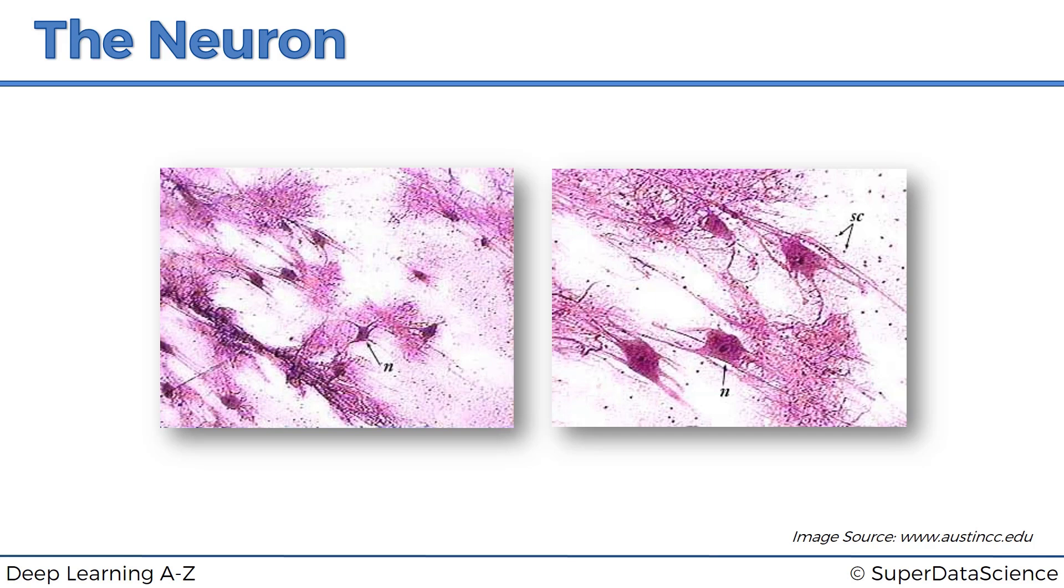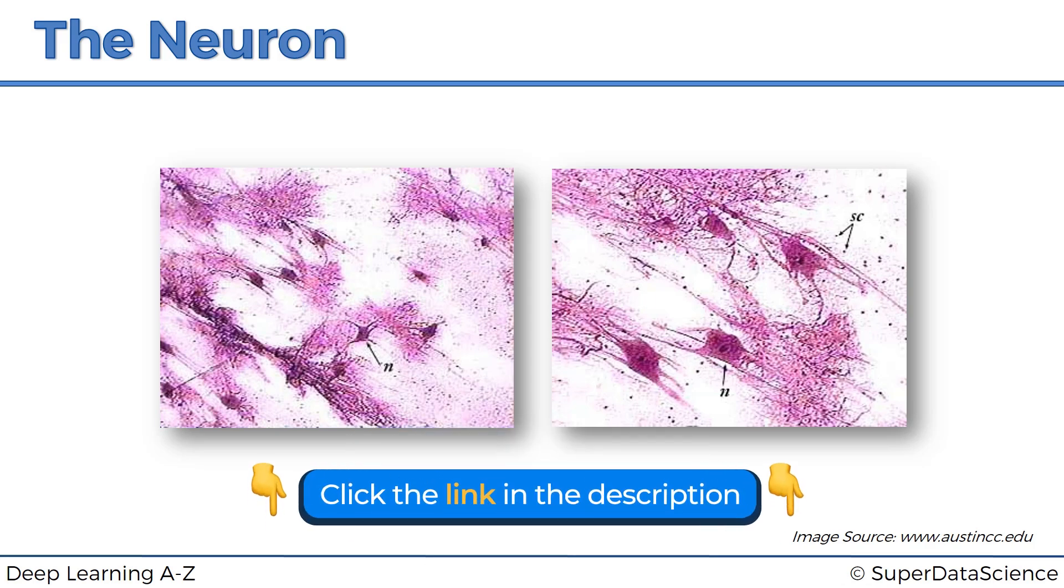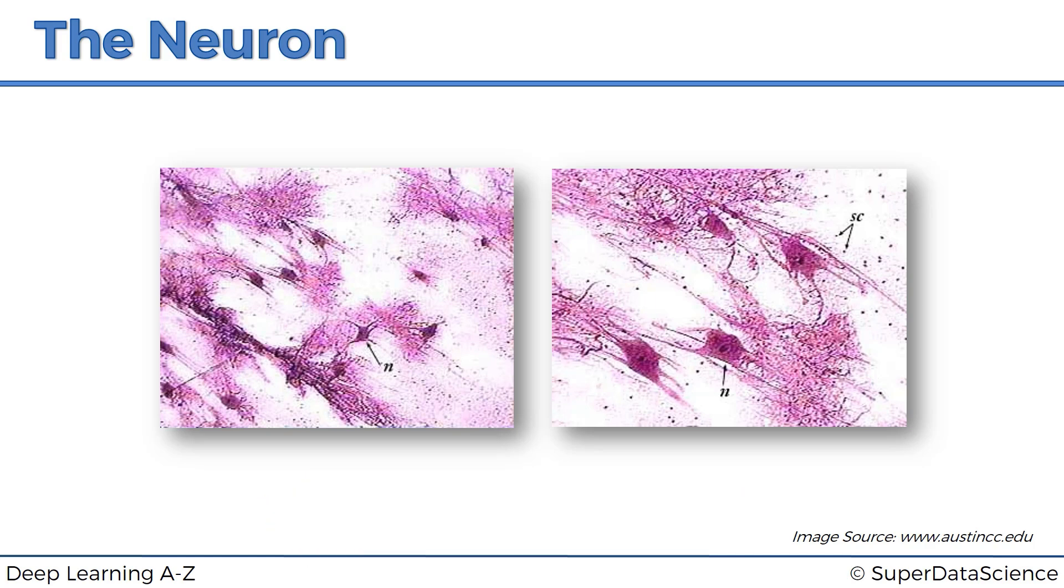And this is very interesting, but the question is how can we recreate that in a machine? Because we really need to recreate that in a machine, since the whole purpose of deep learning is to mimic how the human brain works in the hope that by doing so we're going to create something amazing. We're going to create an amazing infrastructure for machines to be able to learn.